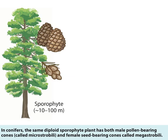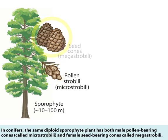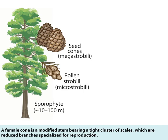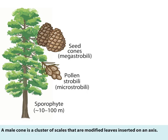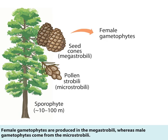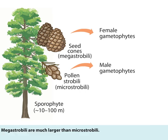In conifers, the same diploid sporophyte plant has both male pollen-bearing cones called microstrobyli and female seed-bearing cones called megastrobyli. A female cone is a modified stem bearing a tight cluster of scales, which are reduced branches specialized for reproduction. A male cone is a cluster of scales that are modified leaves inserted on an axis. Female gametophytes are produced in the megastrobyli, whereas male gametophytes come from microstrobyli. Megastrobyli are much larger than microstrobyli.